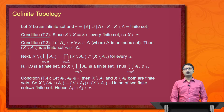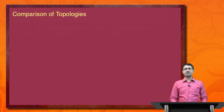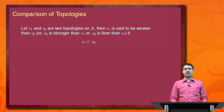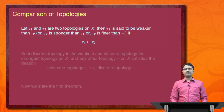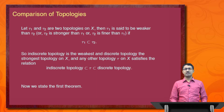Next we go to the definition of comparison of two topologies. Let tau_1 and tau_2 be two topologies on X. Then tau_1 is said to be weaker than tau_2, or tau_2 is stronger than or finer than tau_1, if tau_1 is a subset of tau_2. The indiscrete topology is the weakest and the discrete topology is the strongest topology on X, and any other topology on X satisfies: indiscrete topology is a subset of tau, which is a subset of the discrete topology.